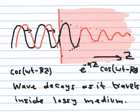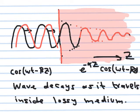Even our bodies have significant conductivity because of their high water content, and water has notable conductivity. So electromagnetic waves traveling through our bodies experience this decay phenomenon, and the energy is converted into heat. This heat is negligible for the weak fields around us, but can be significant for very strong fields.